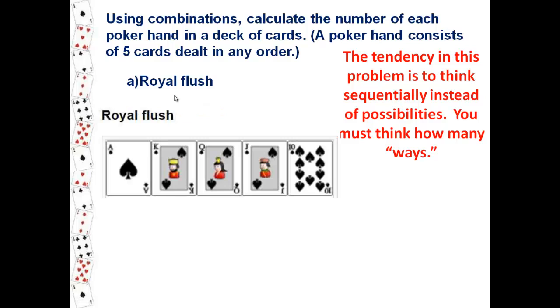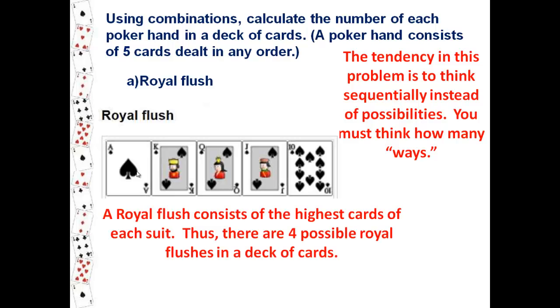A royal flush consists of the same suit and goes from ten, jack, queen, king, and ace (aces are high). There are only four possibilities in a deck of cards. So a royal flush consists of the highest cards of each suit. Thus there are four possible royal flushes in a deck of cards. Your answer for this first part is simply four royal flushes.